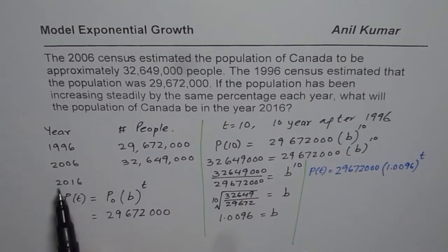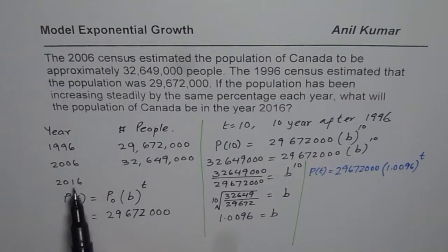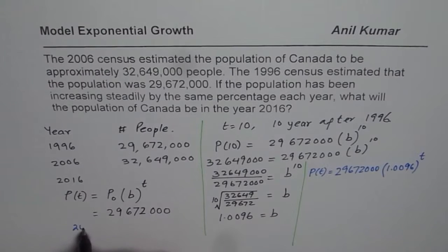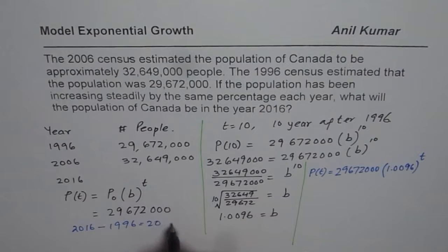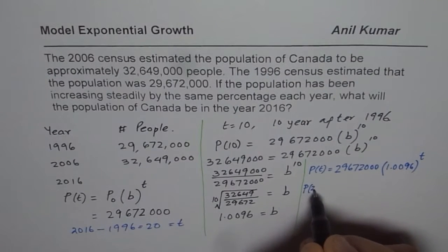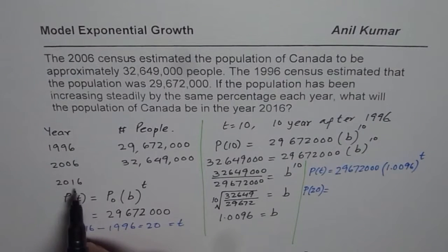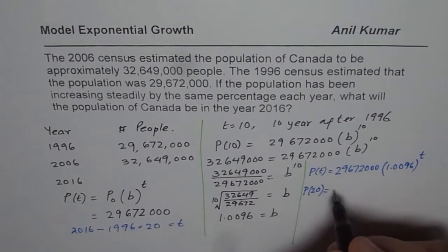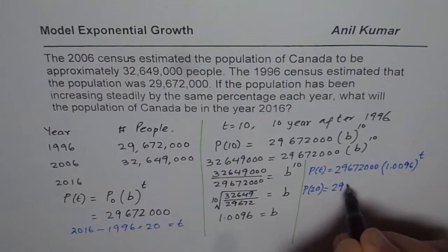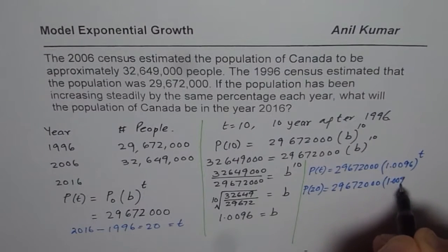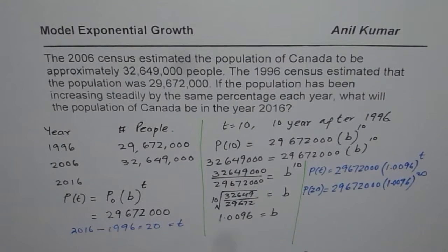To find the population in 2016, we compute 2016 minus 1996, which gives 20 years. So t equals 20 — remember t is the number of years after 1996, so do not substitute 2016 directly. That is critical. We write P(20) = 29,672,000 × 1.0096 to the power of 20. Let's calculate this.